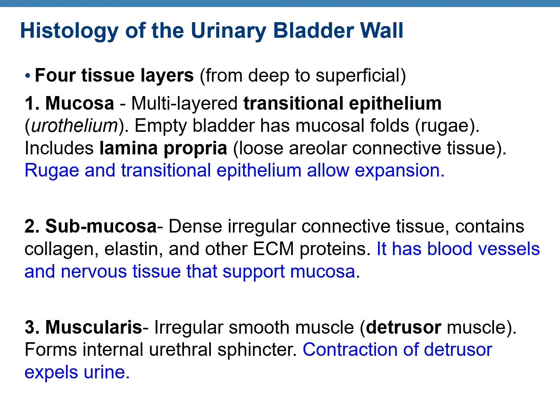The third layer is the muscularis, which contains irregular smooth muscle. In the bladder this is known as the detrusor muscle, and this detrusor muscle forms the internal urethral sphincter. The function of the muscularis layer is that contraction of the detrusor muscle helps in the expulsion of urine.